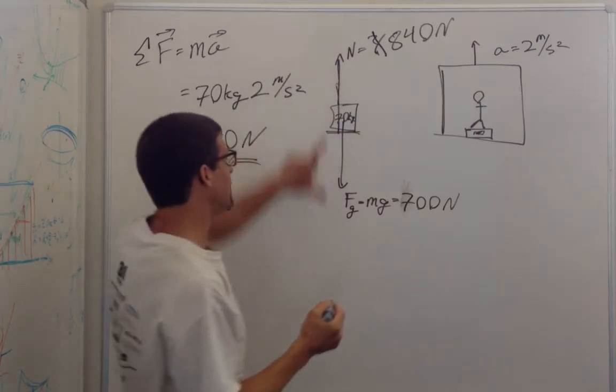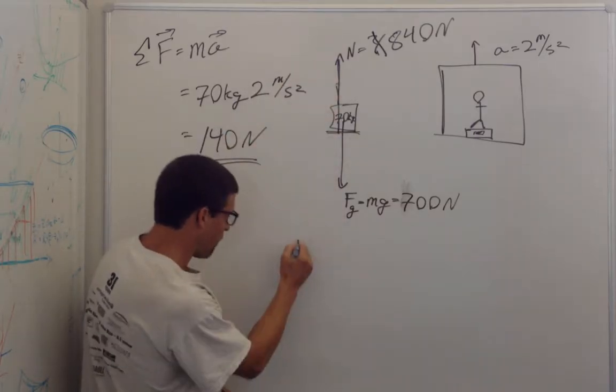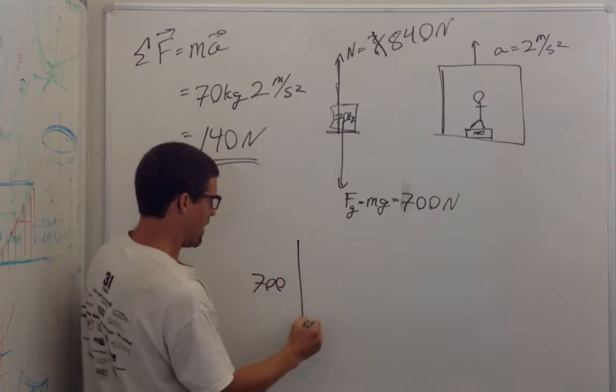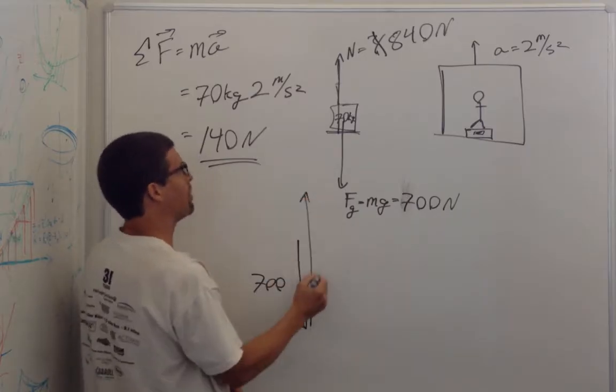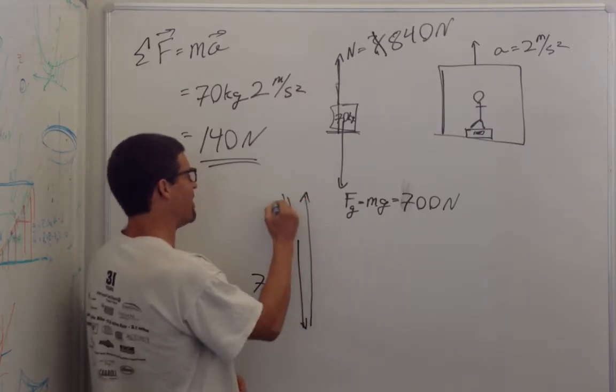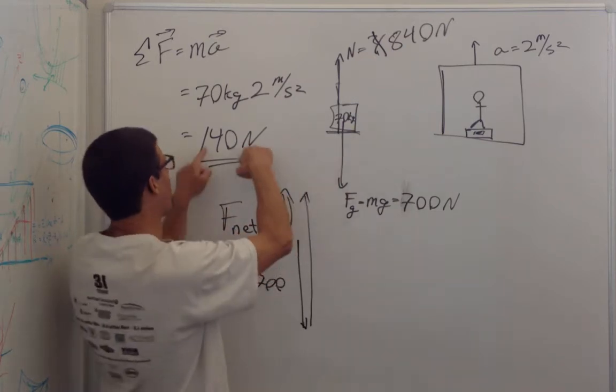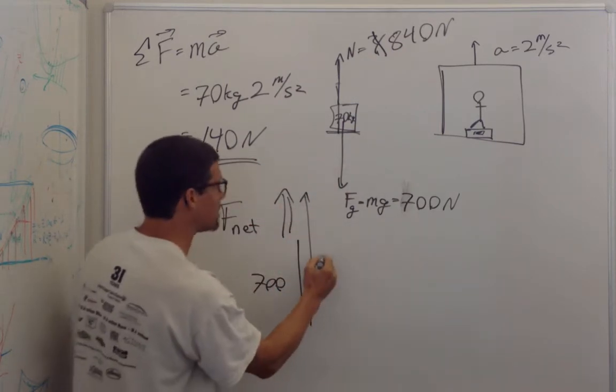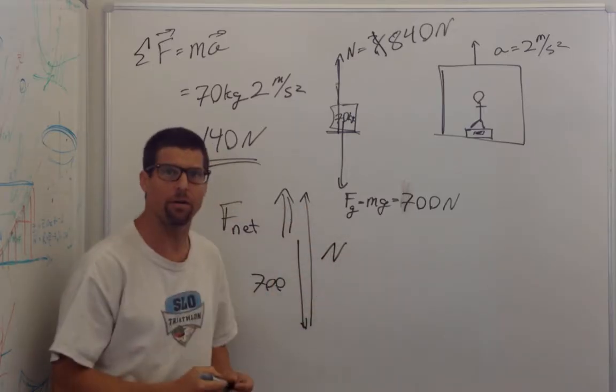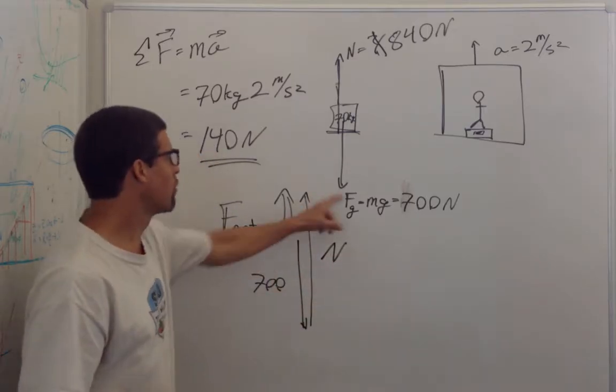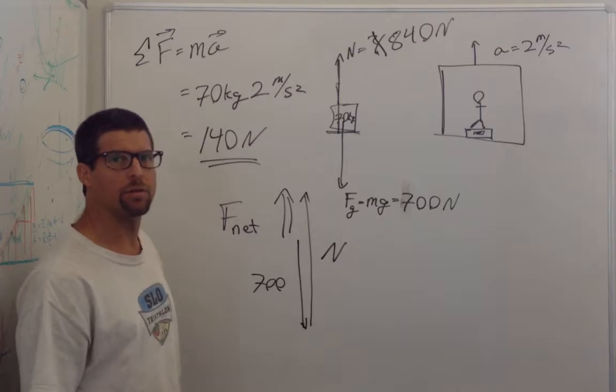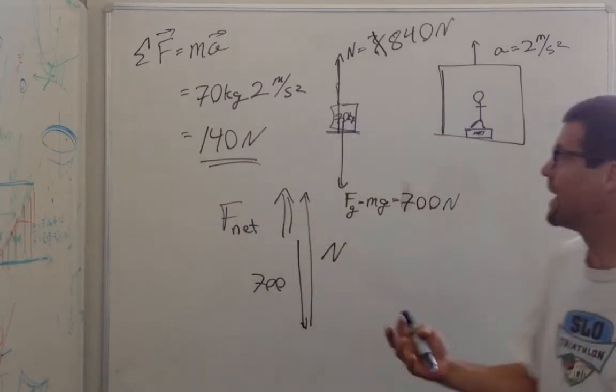Because when you add these two together, with the force of gravity down at 700, and the normal force up, we need to have a net force equal to 140 newtons. So this normal force has to be greater than gravity by 140 newtons. So that's the way it makes sense to me.